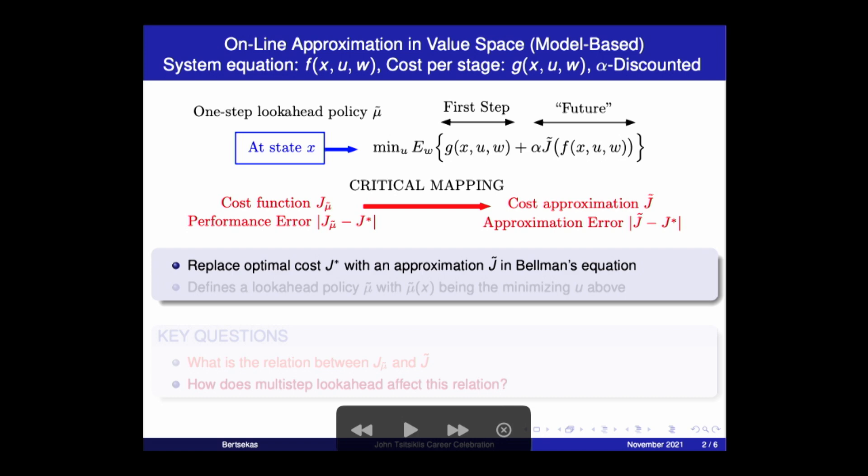This involves approximation in value space. And there's a system equation here, denoted by F, this is an old symbol. There's a G-cost function, like Leslie said, which was used for many years before reinforcement learning came along. And I'm going to consider a discounted problem over an infinite horizon that has an alpha discount. A lot of reinforcement learning revolves around this figure.